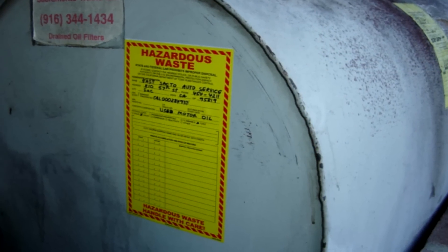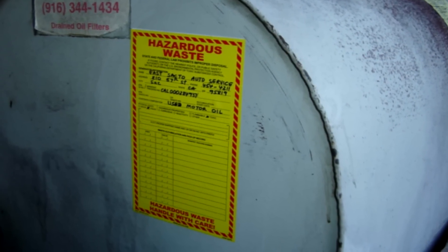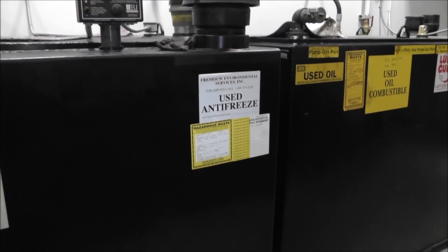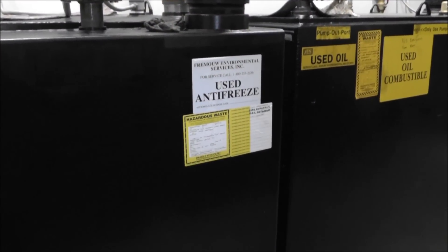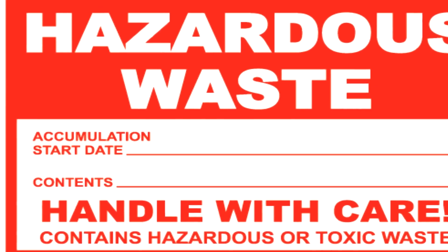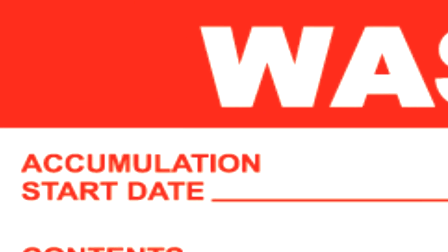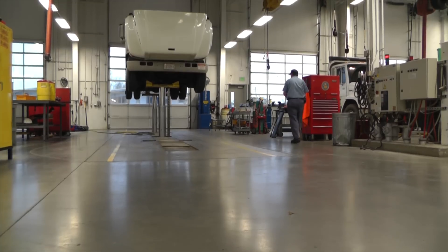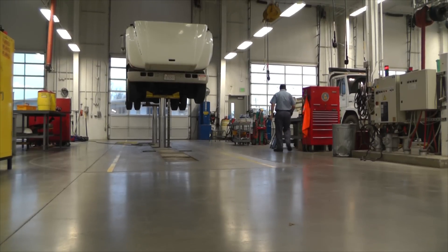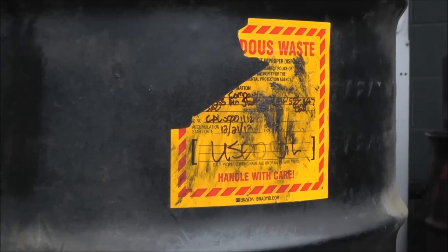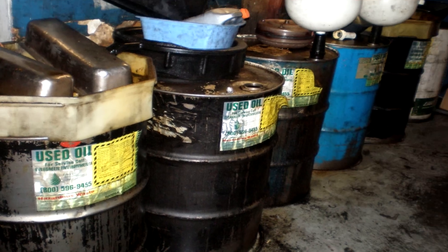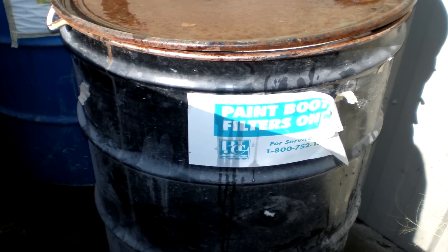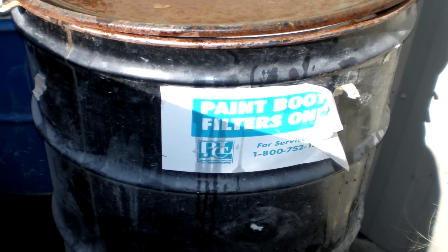If a facility utilizes a tank to accumulate hazardous waste, the tank is required to be labeled with the wording 'hazardous waste' along with the accumulation start date. The hazardous waste generator is also required to periodically inspect the containers and tanks on site to be sure labels have not faded or fallen off.